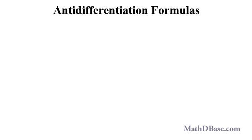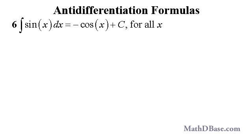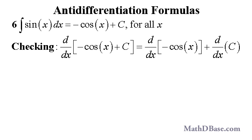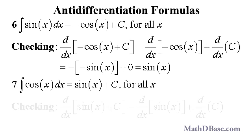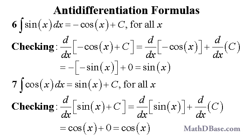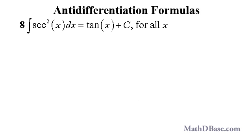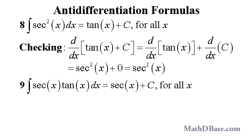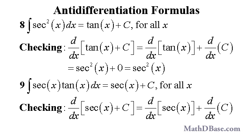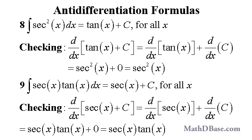There are also antidifferentiation formulas for trigonometric functions. The antiderivative of sine of x is negative cosine of x plus c; checking, the derivative of negative cosine of x plus c equals sine of x. The antiderivative of cosine of x is sine of x plus c; checking, the derivative of sine of x plus c equals cosine of x. The antiderivative of secant squared of x is tangent of x plus c; checking, the derivative of tangent of x plus c equals secant squared of x. The antiderivative of secant of x times tangent of x is secant of x plus c; checking, the derivative of secant of x plus c equals secant of x times tangent of x.